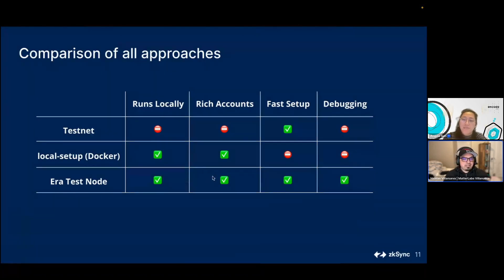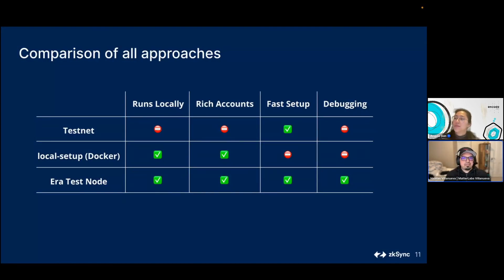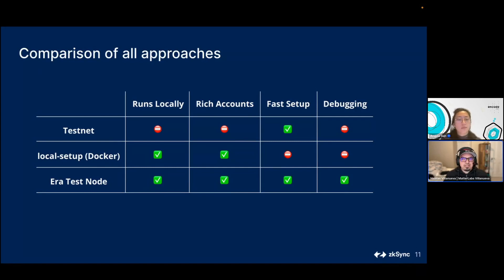Rich accounts: one of the pains with testnet is getting funds and Goerli ETH. When starting up the local setup we inject 10 rich accounts — I believe configured with 10 million ETH each — but you don't have to do any configuration, it's already there when you start the node. Fast setup: testnet is already alive so it's fast, but the Dockerized setup takes five-plus minutes to reach a functional state. The era test node is up in less than a second.